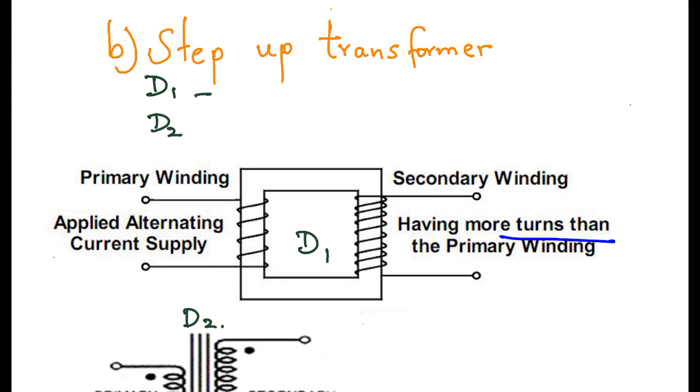Diagram 1 represents the primary and secondary coils of a step-up transformer, while diagram 2 represents the circuit representation of a step-up transformer.